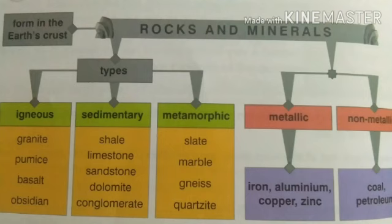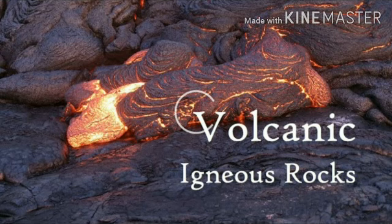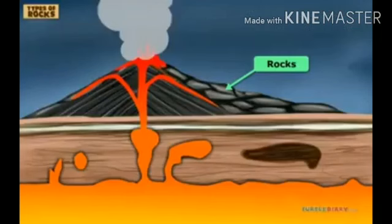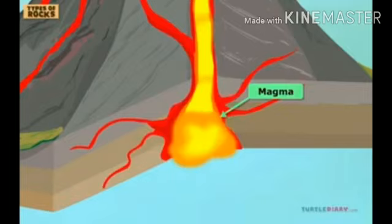Igneous rocks were the first rocks to form on the earth, so they are also called primary rocks. They were the basis of most landforms such as plains, mountains and ocean beds. These rocks are formed by the solidification of the hot molten material called magma.